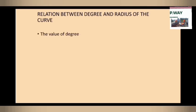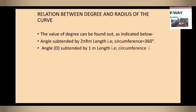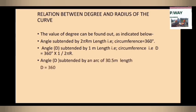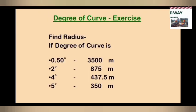The relationship between degree and radius: the circumference of a circle is 2πR meters, and the total angle is 360 degrees. For 1 meter length the angle is 360 ÷ 2πR. For 100 feet (30.5 meters), degree = 360 × 30.5 ÷ 2πR, which gives degree = 1750 ÷ radius. Therefore, degree × radius = 1750 meters.